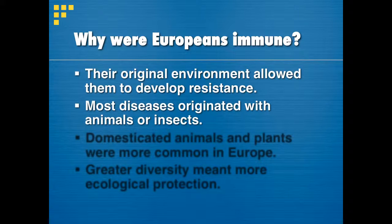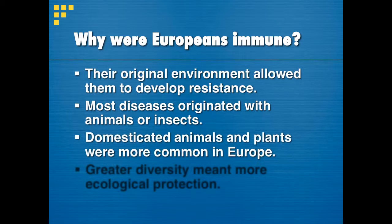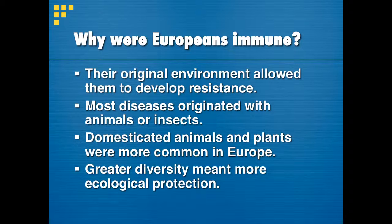Most of these diseases started off with animals or insects. Most of the sicknesses that human beings get started off with other species and mutated until they began to infect us. Domesticated animals — tame animals that work with humans — and plants were a lot more common in Europe. The natives did not have pets for the most part, so they didn't develop immunity simply by having animals around them regularly. Because the European environment had greater diversity, it also had more protection from the elements, so when Europeans arrived in the Americas, they were much stronger from a health perspective than the natives they encountered.